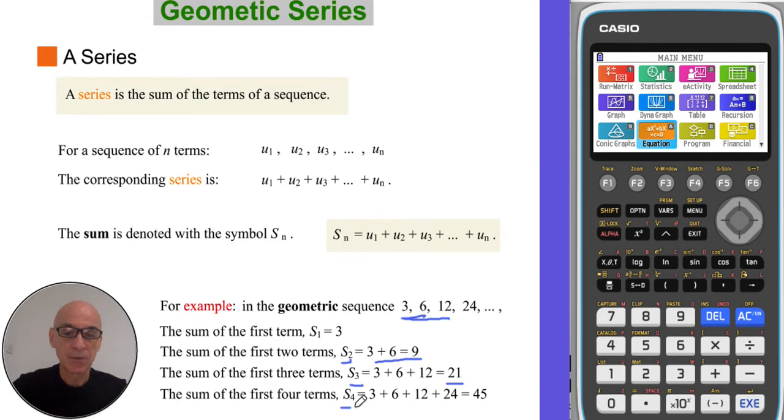And S4, the sum of the first four terms, which is equal to 45.